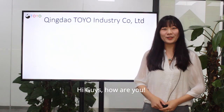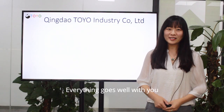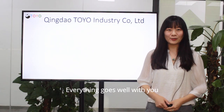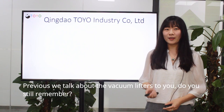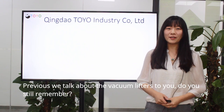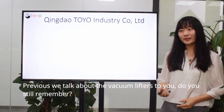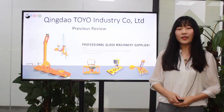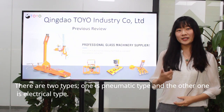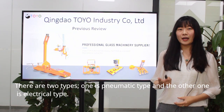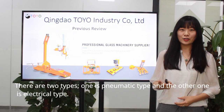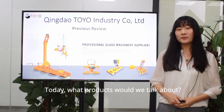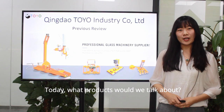Hi guys, how are you? Hope everything goes well with you. Previously, we talked about the vacuum lifter. Do you still remember? There are two types: one is the pneumatic type and the other one is the electronic type. Today, what products would we talk about?